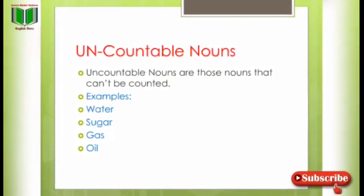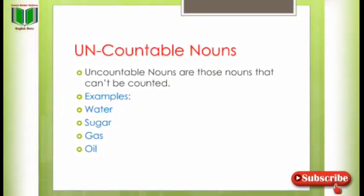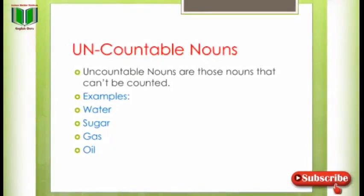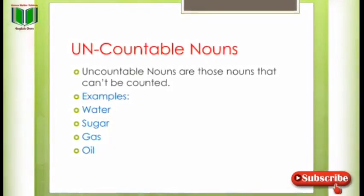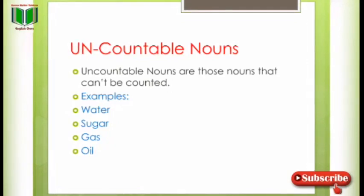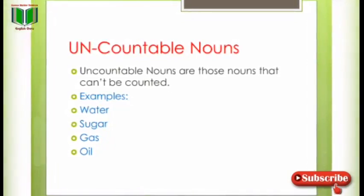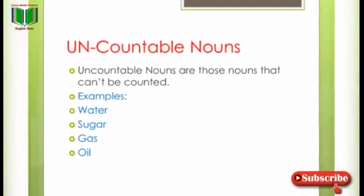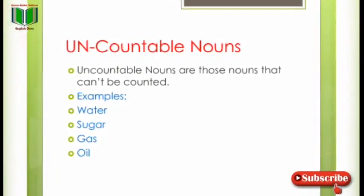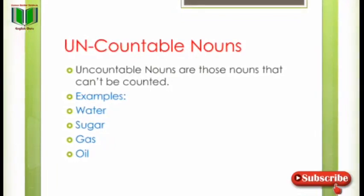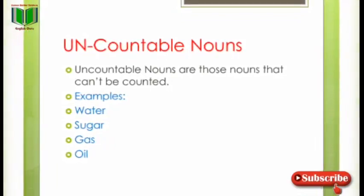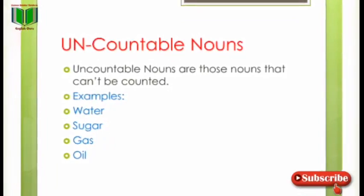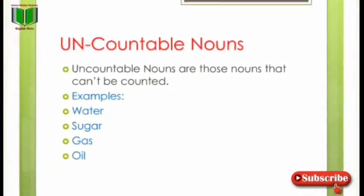Uncountable nouns are those nouns that can't be counted۔ Un مطلب non/no — یعنی وہ nouns جنہیں گنا نہیں جا سکتا، ناقابل گنتی۔ Examples: water, sugar, gas, oil — یہ وہ چیزیں ہیں جن کو آپ گن نہیں سکتے۔ اس لیے ہم انہیں uncountable nouns کہتے ہیں۔